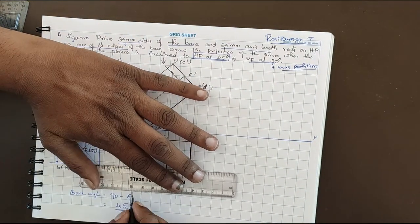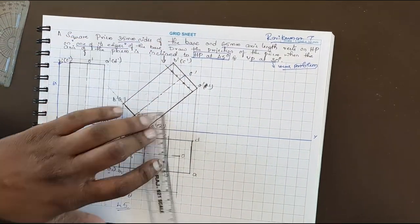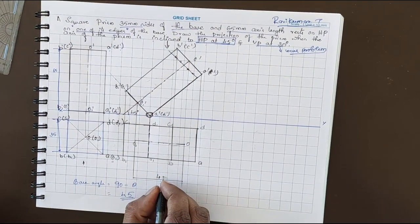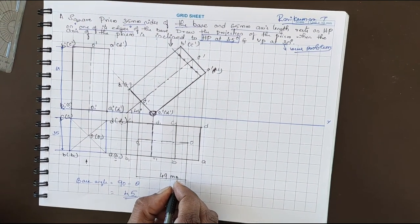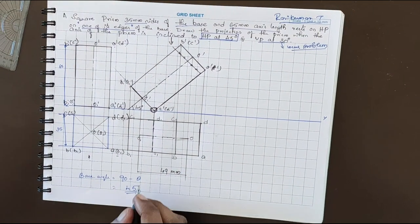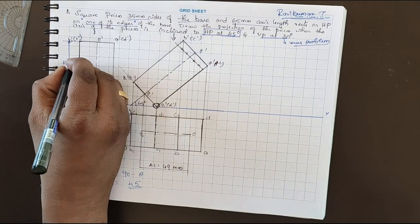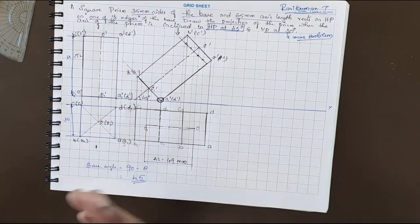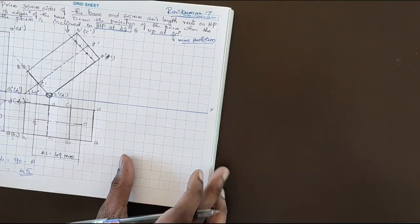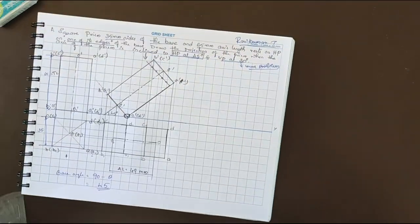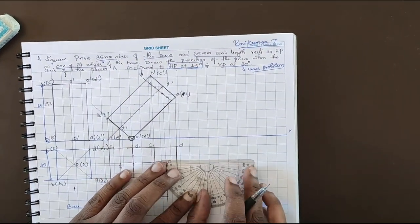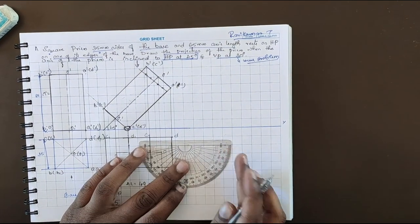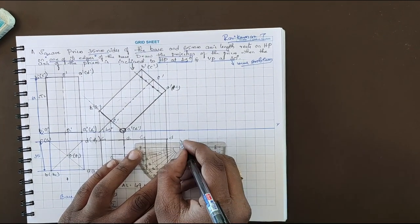Mention this dimension — it is around 49mm. This is the apparent length and this is the true length. For the final position, VP inclination is given as 30 degrees. Leave one or two lines, then take 30 degrees.